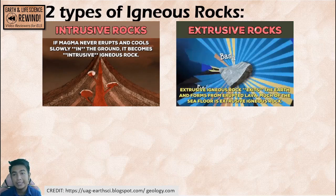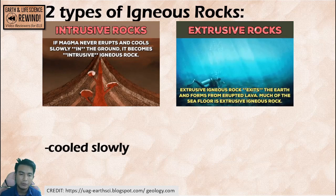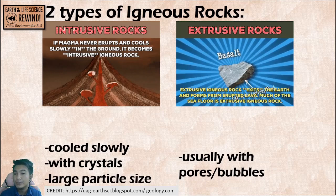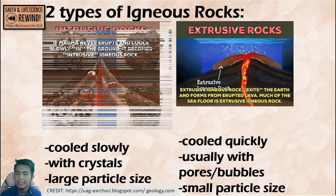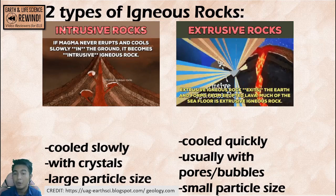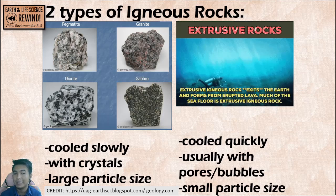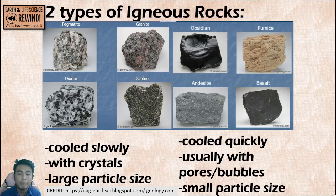Differences between intrusive and extrusive igneous rocks: intrusive igneous rocks are cooled slowly, so they have large crystals and large particle size. Extrusive igneous rocks usually have pores or bubbles because they are cooled quickly and have small particle size. Examples of intrusive rocks are pegmatite, gabbro, and granite — they have large crystals and large particles. Extrusive rocks include pumice, basalt, obsidian, and andesite — they have pores, little holes, and smaller particles.